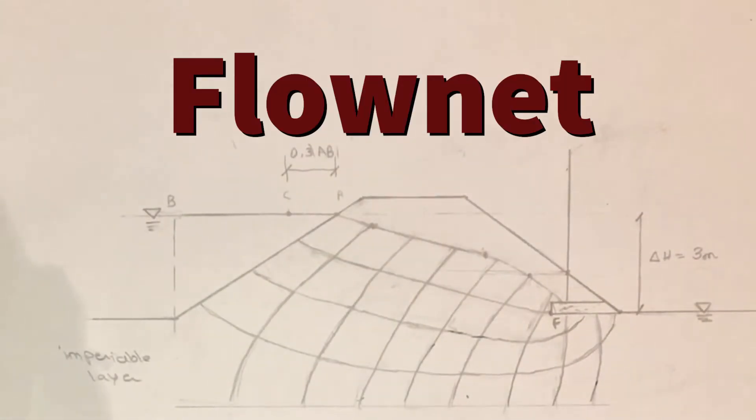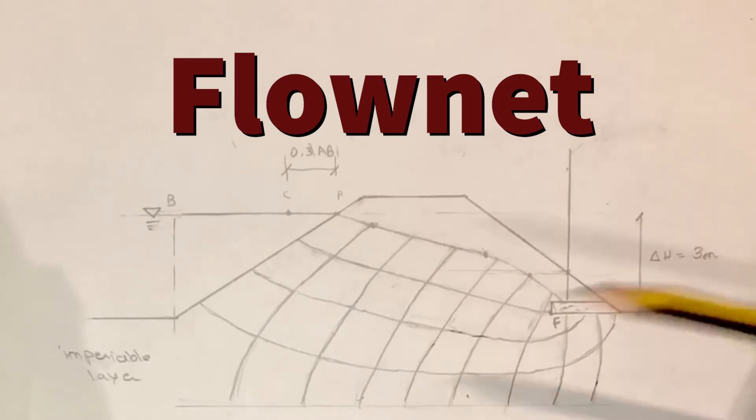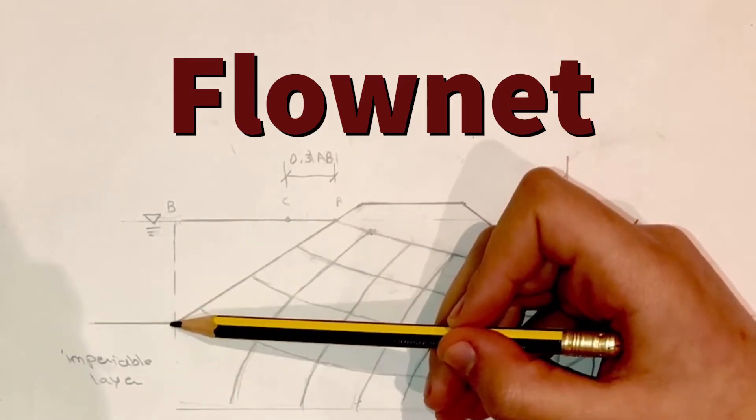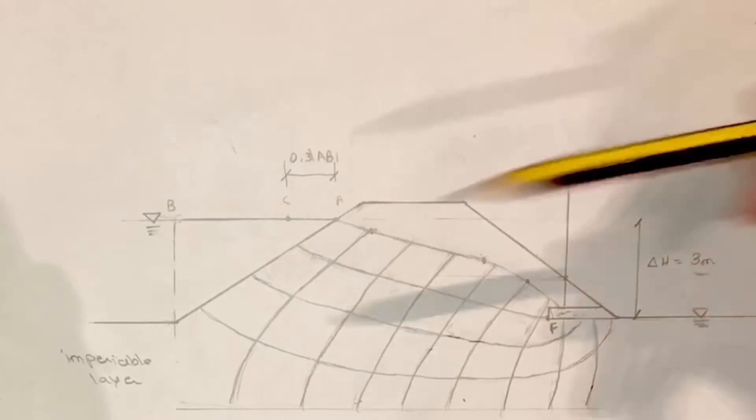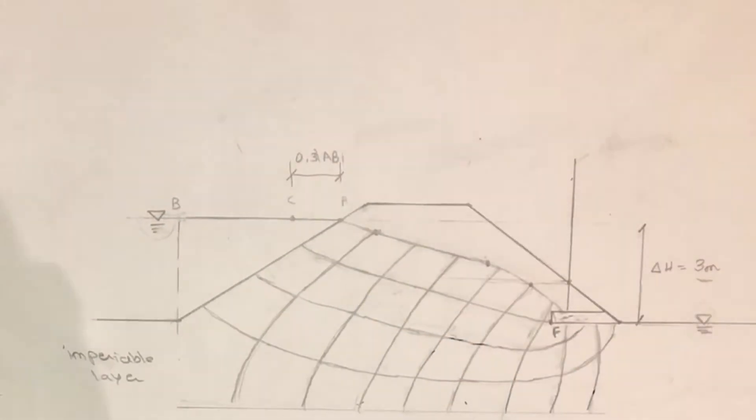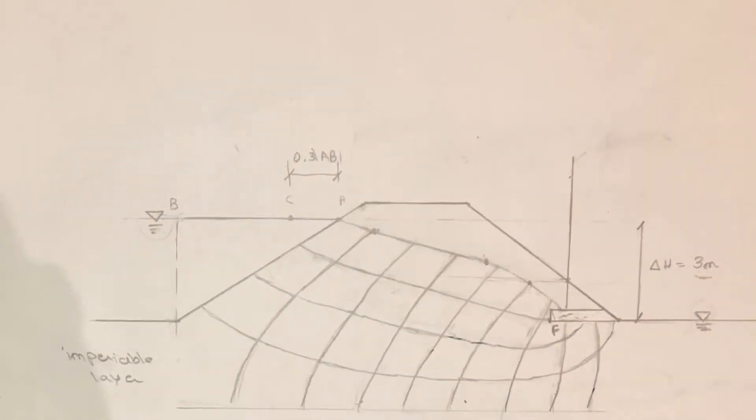So for our dam design, this is the flow net. We went to floodlevel.ie and got the maximum flood level, which is 2.9, so the delta H will be 3 meters between both the water levels on the downstream and upstream.